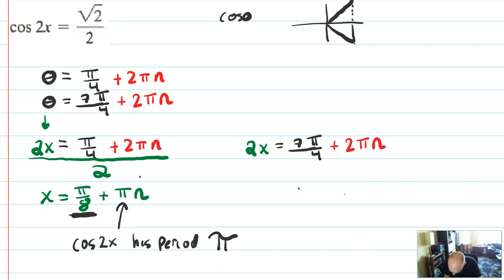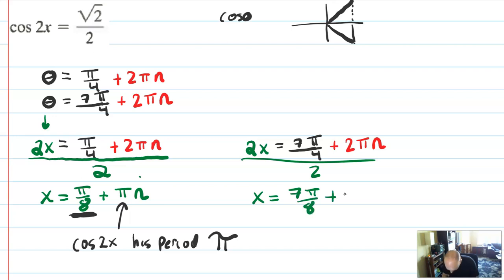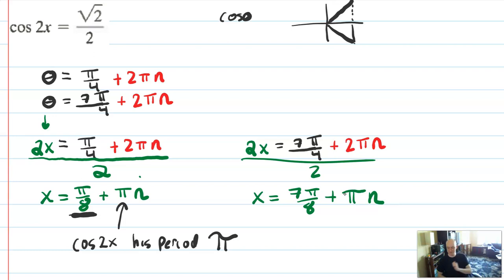Let's do the same thing on the other side. Divide by 2, and I get x equals 7π over 8. So 2x divided by 2 is x, 7π over 4 divided by 2 is 7π over 8, and 2πn divided by 2 is πn. So x is also 7π over 8 plus πn.